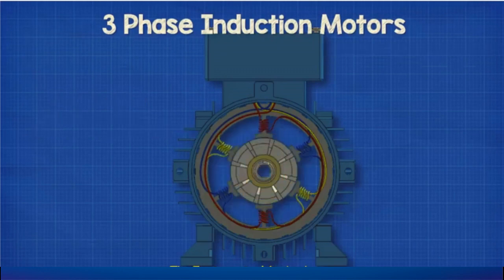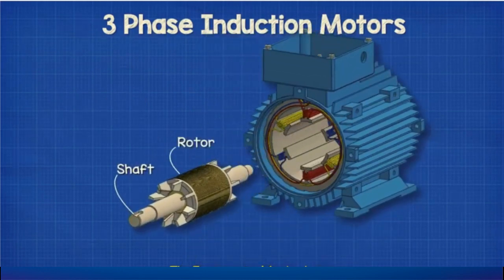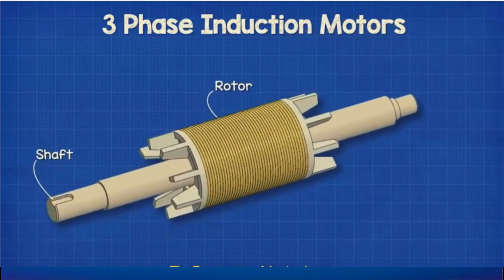In AC motors, electricity is sent directly to the outer coils of the stator. The stator has multiple plates that extend out from its center with copper magnetic wire.